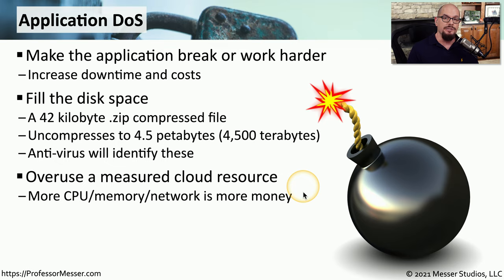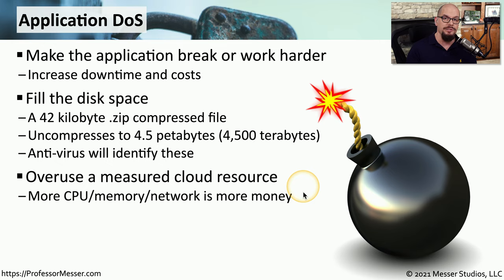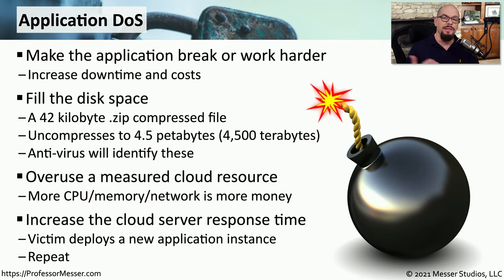Another type of application denial of service might target a cloud-based service. Many organizations configure their cloud-based services to automatically add more resources as the application becomes busier — this is called rapid elasticity, a very common way to maintain uptime. But if an attacker is able to consume more and more resources of that application, the web-based service will continue adding more and more application instances, each costing more money. If an attacker can slow down the application to reduce response times, that may also cause more instances to be created. In all of these cases, the attacker is trying to use more resources, make the system harder to manage, and make it much more expensive for the end user.